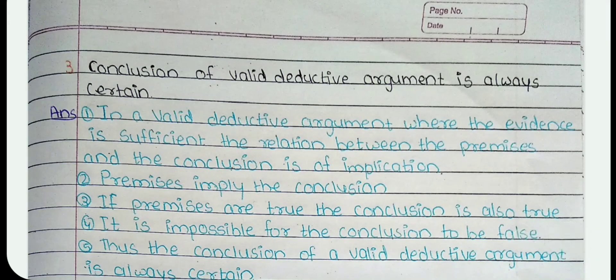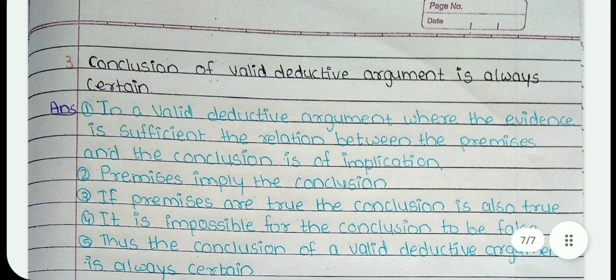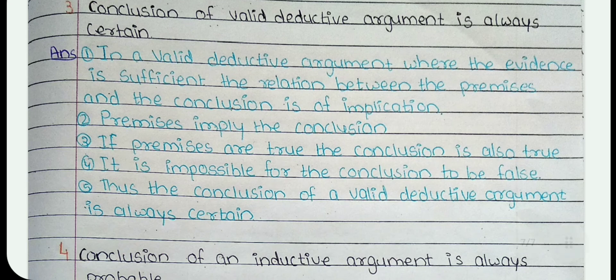3. Conclusion of valid deductive argument is always certain. In a valid deductive argument, where the evidence is sufficient, the relation between the premises and the conclusion is one of implication. Premises imply the conclusion. If premises are true, the conclusion is also true. It is impossible for the conclusion to be false. Thus, the conclusion of a valid deductive argument is always certain.